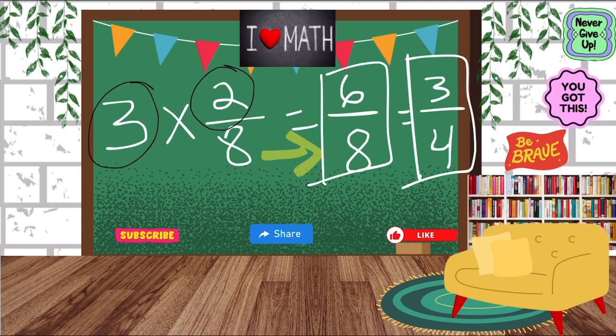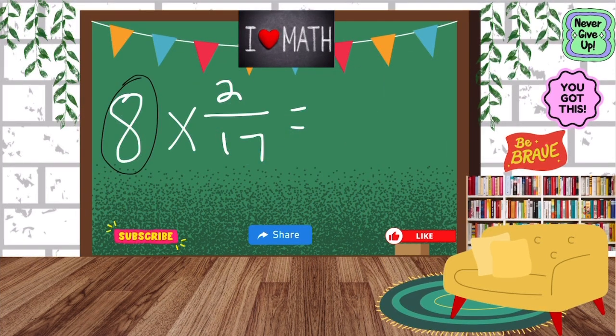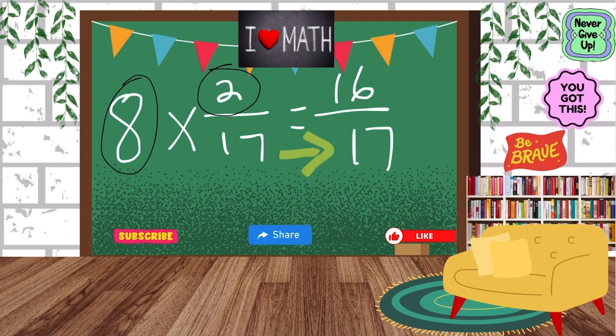So now let's try one last one. We have 8 times 2/17. We're going to take our whole number, multiply it by the numerator. 8 times 2 is 16. Bring over our denominator because it stays the same. And our final answer is 16 over 17. And that is it.